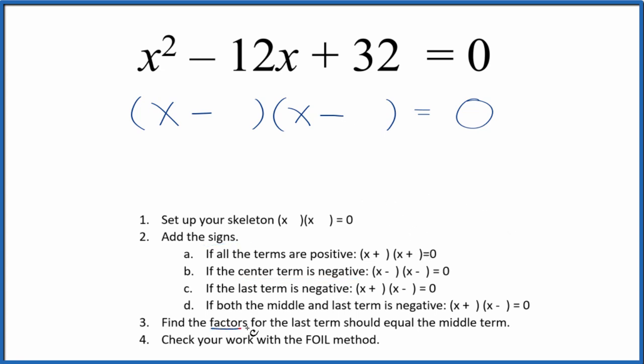Once we do that, we find the factors for the last term, that's the 32, and they should add up to the middle term, the 12.